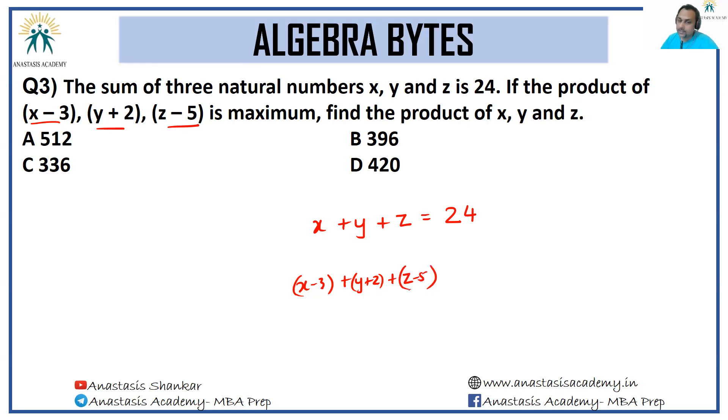We have introduced a -3, a +2, a -5, a net of -6 on the left-hand side, so there has to be a net of -6 on the right-hand side as well. This is equal to 18.